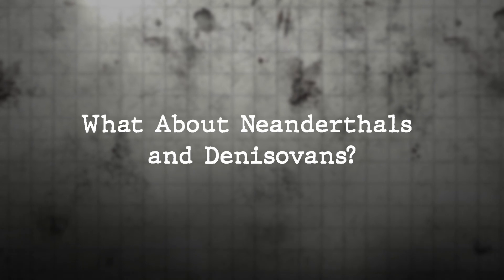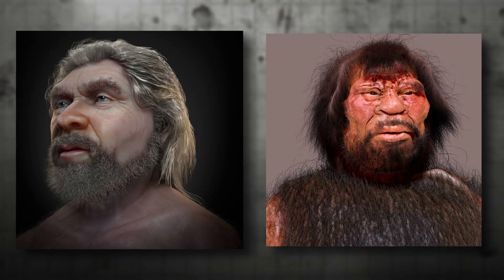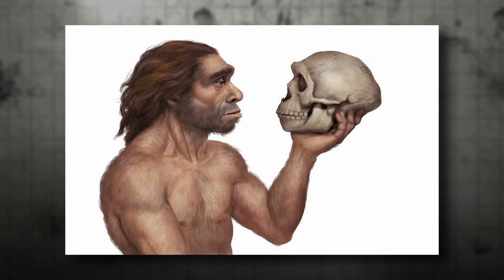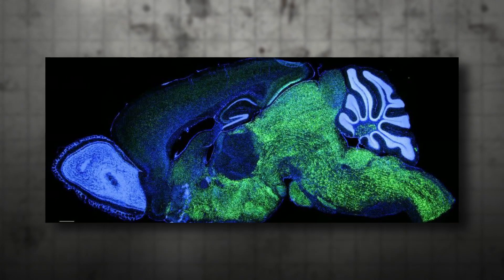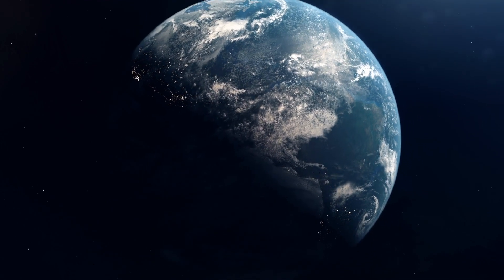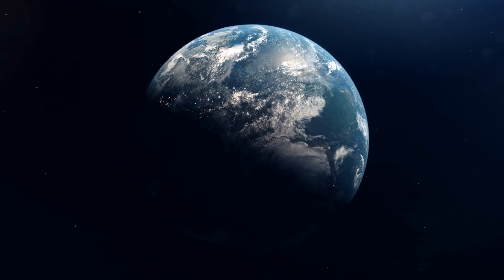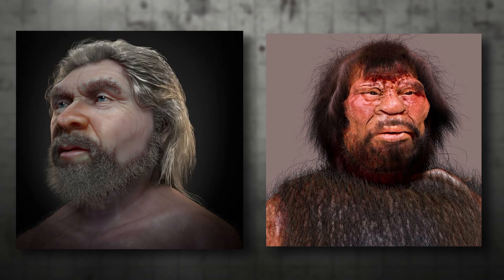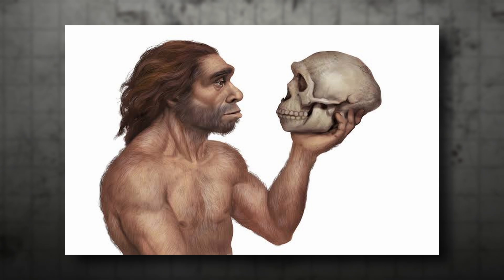A key revelation from this research is that Neanderthals and Denisovans did not possess the human NOVA1 mutation. Instead, they had the same ancestral version of the gene that is found in all non-human animals. This suggests that early Homo sapiens in Africa developed the I-197V mutation in NOVA1, giving them a possible advantage in vocal communication. As modern humans migrated out of Africa and spread worldwide, this mutation may have been a key factor in the dominance of our species over other hominin groups. Did Neanderthals and Denisovans lack the same capacity for complex, structured speech? Could the ability to develop sophisticated language have given Homo sapiens a decisive survival advantage?